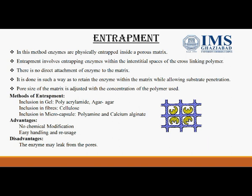In entrapment, enzymes are physically entrapped into a porous matrix within the interstitial spaces of a cross-linked polymer. The pore size of the support can be regulated by adjusting the concentration of the polymer — high concentration gives small pore size, low concentration gives large pore size. This is regulated according to the size of the enzyme and substrate. The method is designed so that the enzyme is retained within the matrix while the substrate can penetrate, allowing the enzyme-substrate reaction to occur and product to be formed.